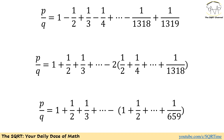Remember P over Q is defined as 1 minus 1 over 2 plus 1 over 3 and so on so forth. We are going to write it as 1 plus 1 over 2 plus 1 over 3 and so on so forth, minus 2 times the sum of 1 over 2 plus 1 over 4 up to 1 over 1318. It is easy to verify this is correct: the 1 over 2 term combined with negative 2 times 1 over 2 gives minus 1 over 2, which matches the original. Similarly, we get plus 1 over 4 and then negative 2 times 1 over 4, and so on.